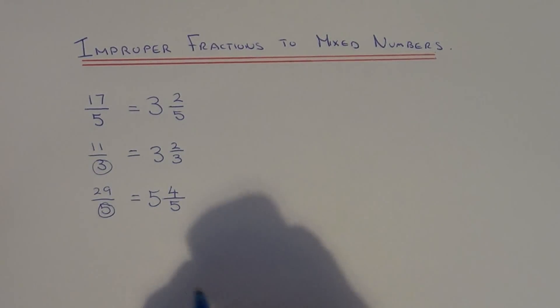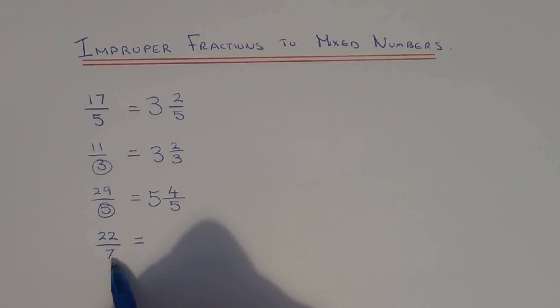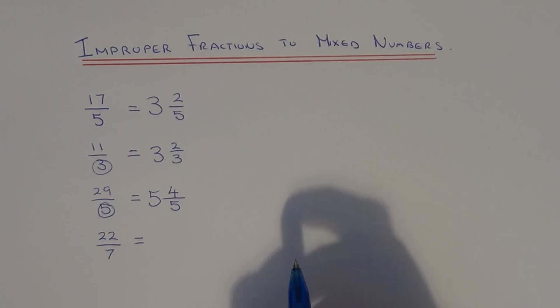Let's do one last example. So let's go with 22 sevenths. So again all you need to do is do 22 divided by 7. So 7, 14, 21.